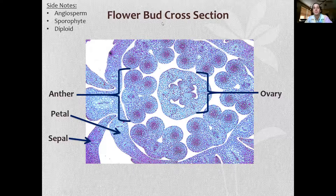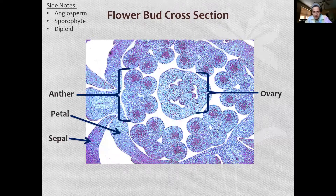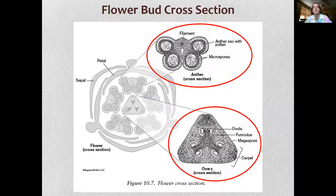We have a flower bud in cross-section, and you may notice something isn't right with this line drawing here — it's the number of flower parts. So you might remember dicots have flower parts in numbers of four or five.